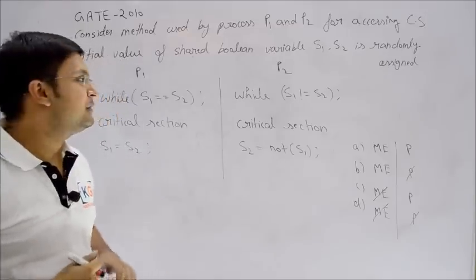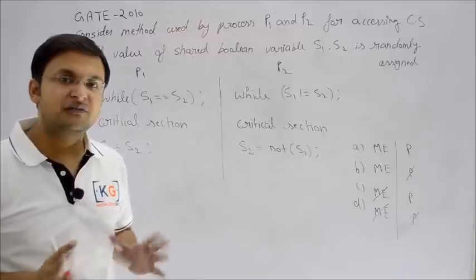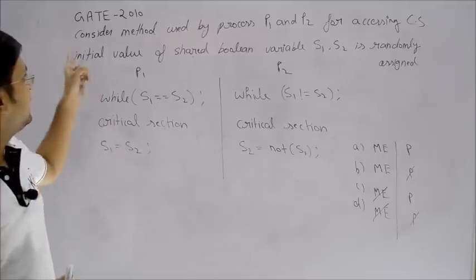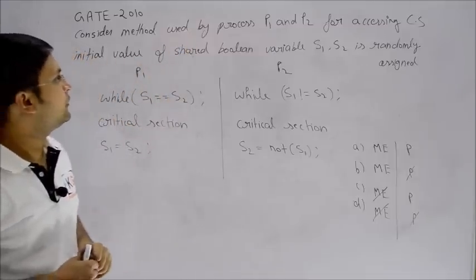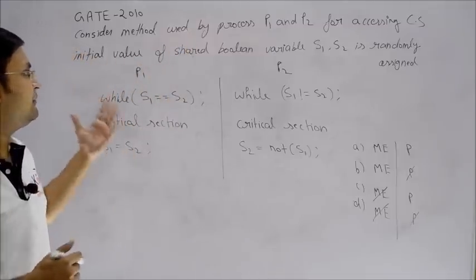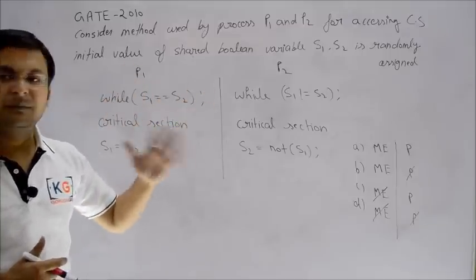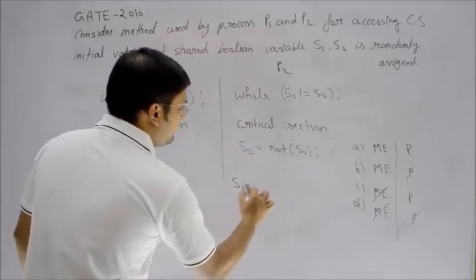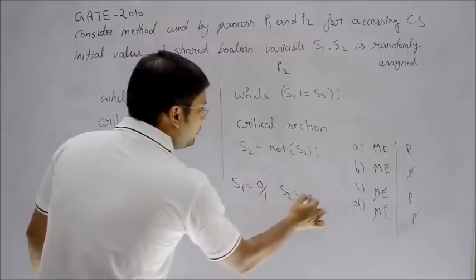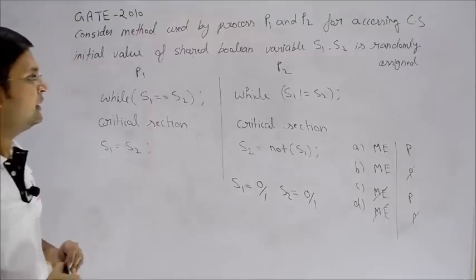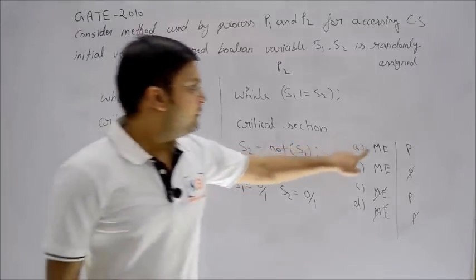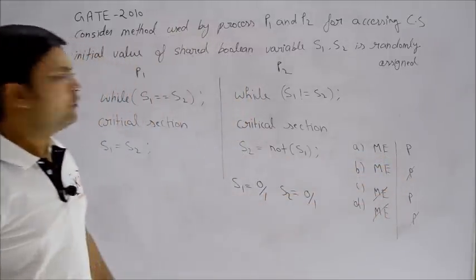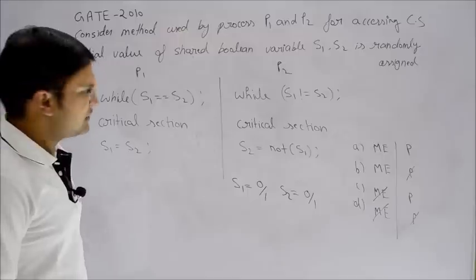Let's try to solve some problems which were asked recently, based on the knowledge we acquired from the last three solutions. There's a GATE 2010 question: consider the method used by process P1 and P2 for accessing the critical section. The initial value of shared boolean variables s1 and s2 can be assigned randomly. The question asks whether this solution ensures both mutual exclusion and progress, or just one, or neither.